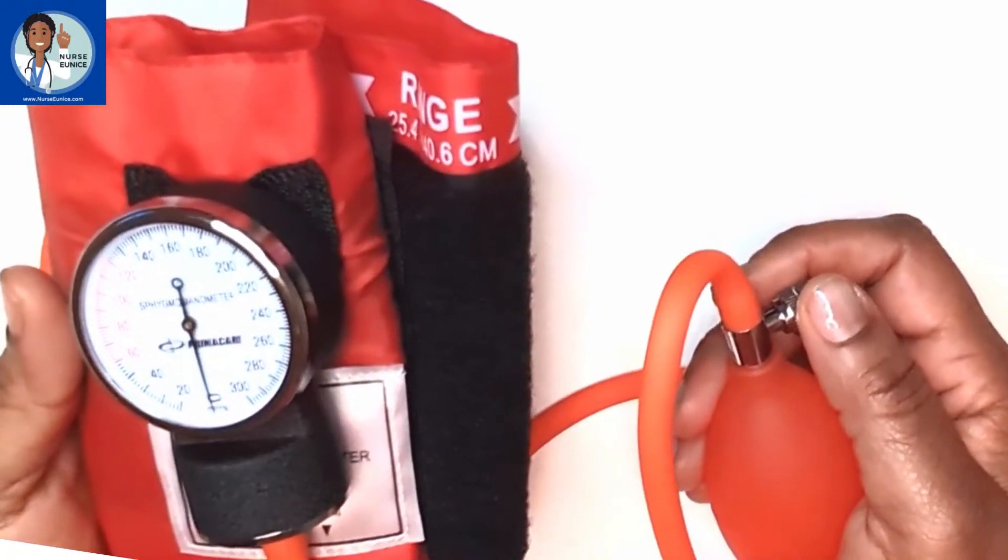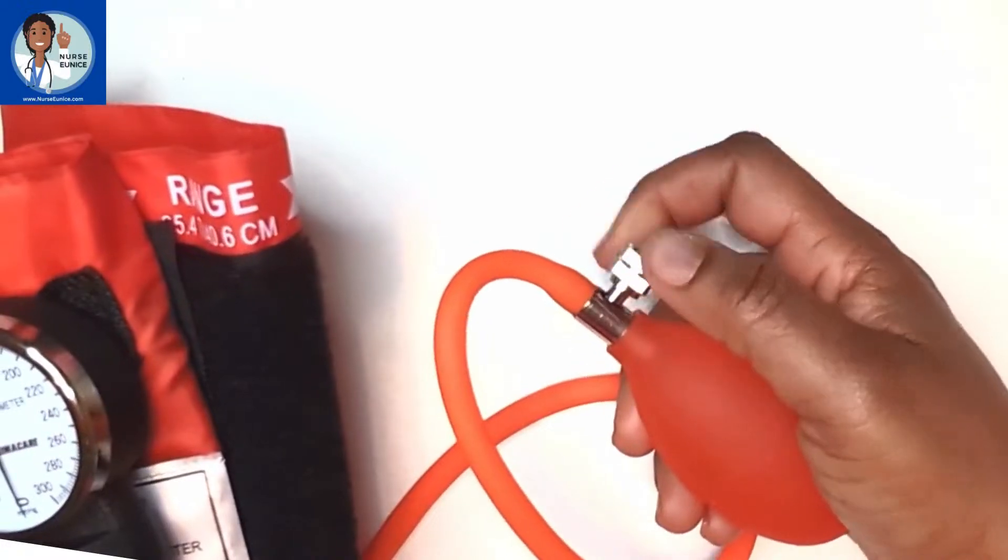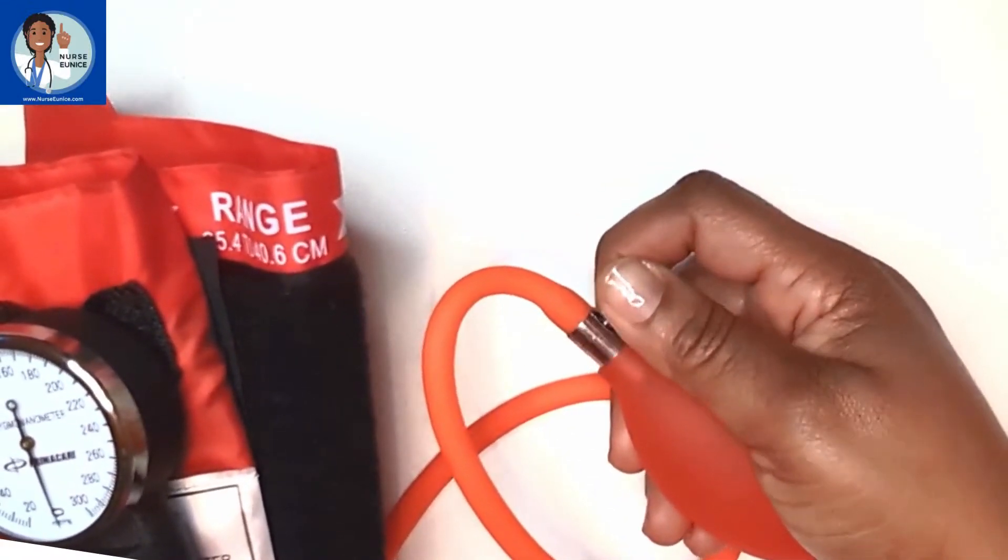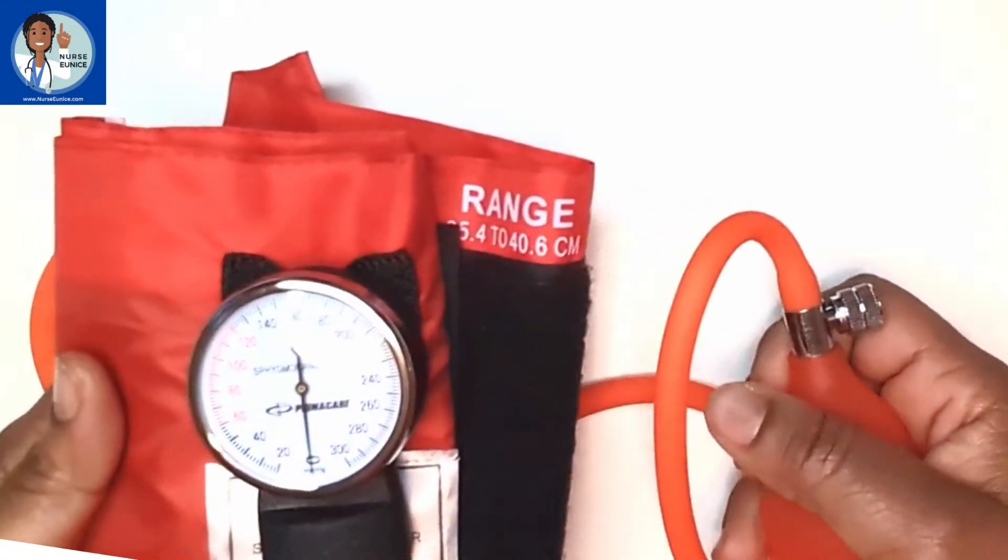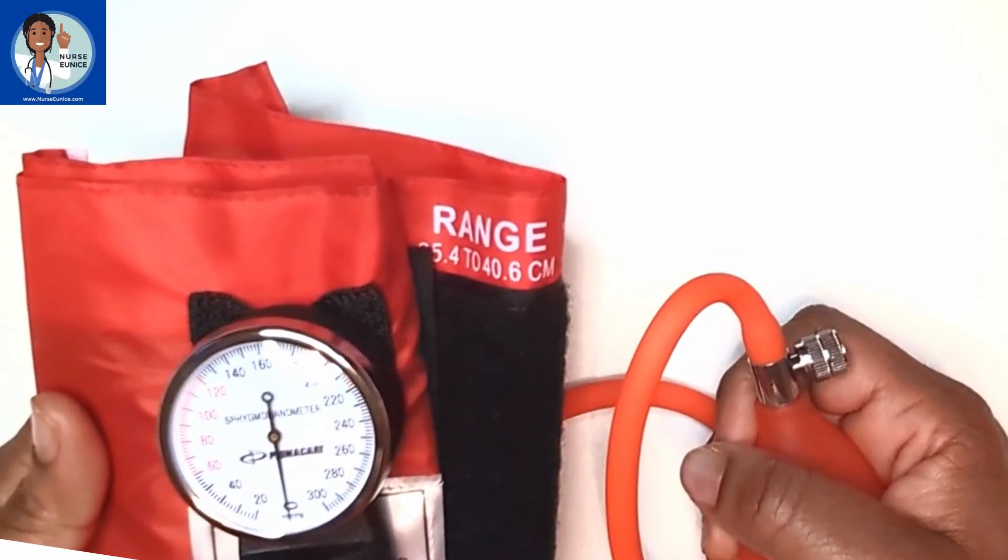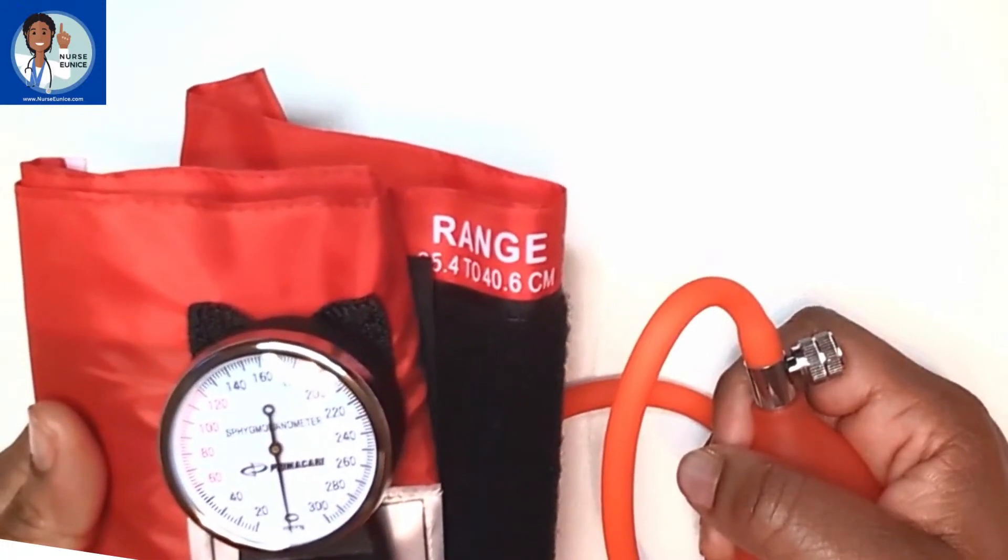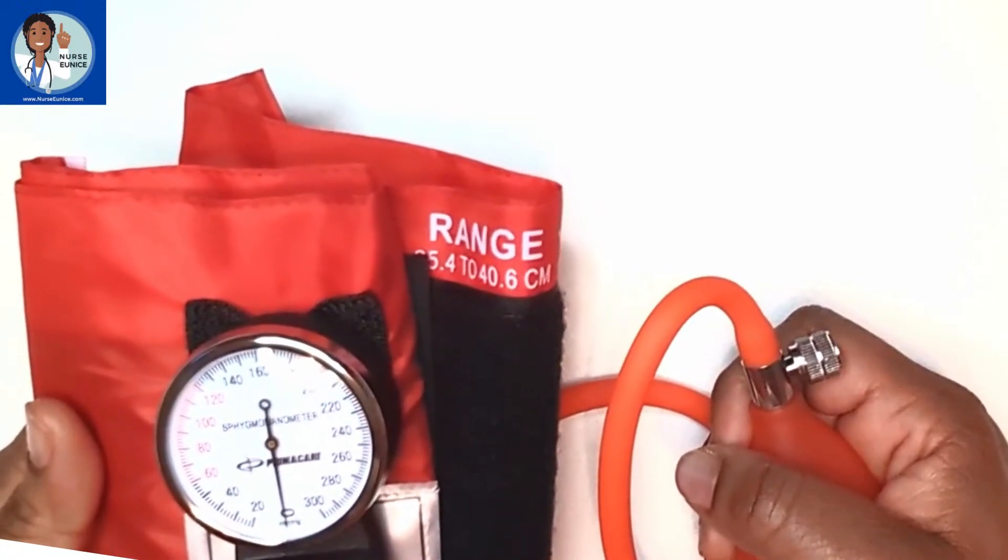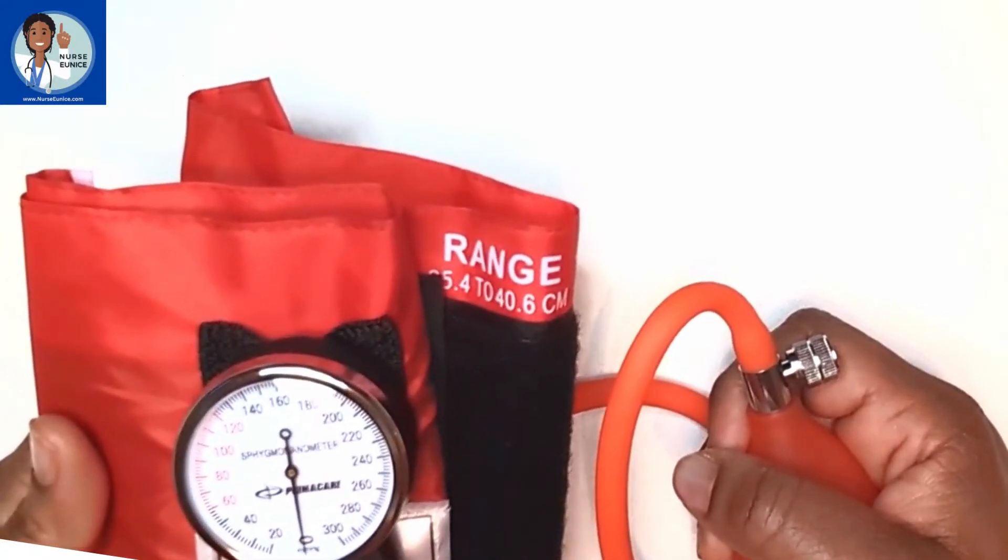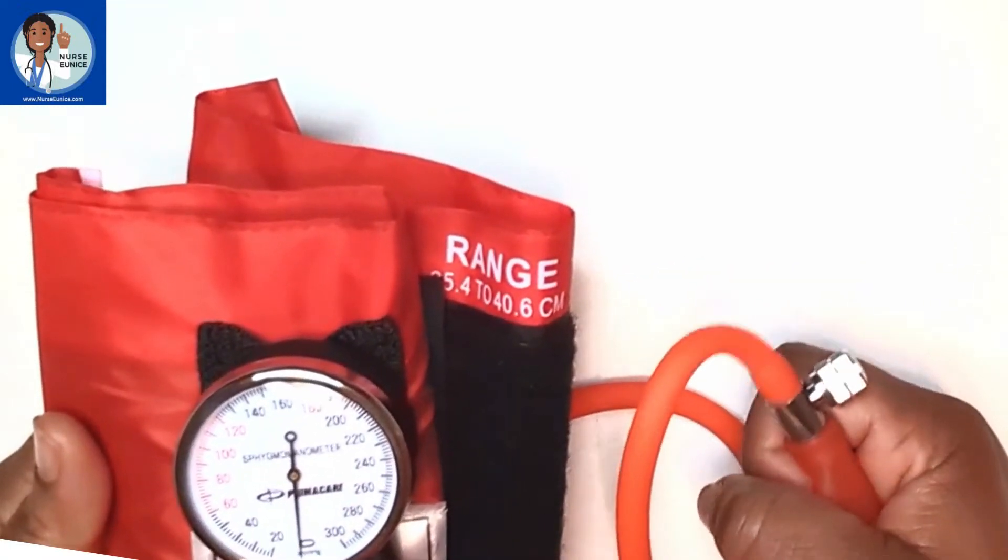Let's practice once more. What do I need to do to my air valve? I'm going to turn it away, close it, but not make it so tight until I can't open it with my two fingers. Once it's closed, you can do the two-step method where you feel the radial pulse and inflate the cuff until you no longer feel any pulsations and go 30 above that number. Or you can just inflate the cuff to about 150 if it's someone who does not have a history of hypertension. If they have a history of hypertension, you may have to go to 180 or 200.